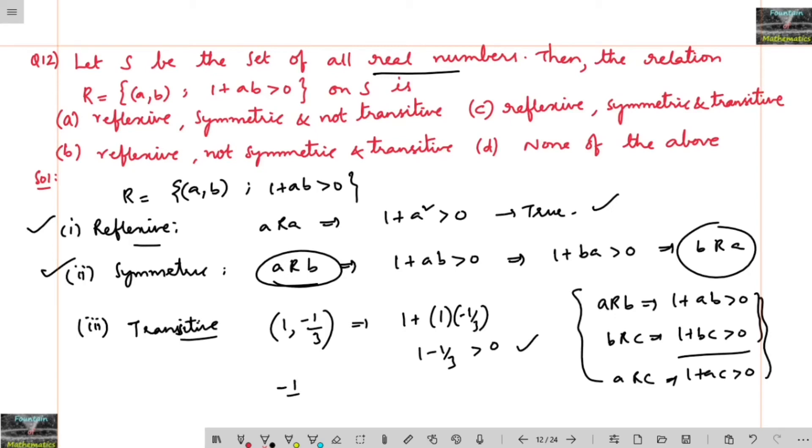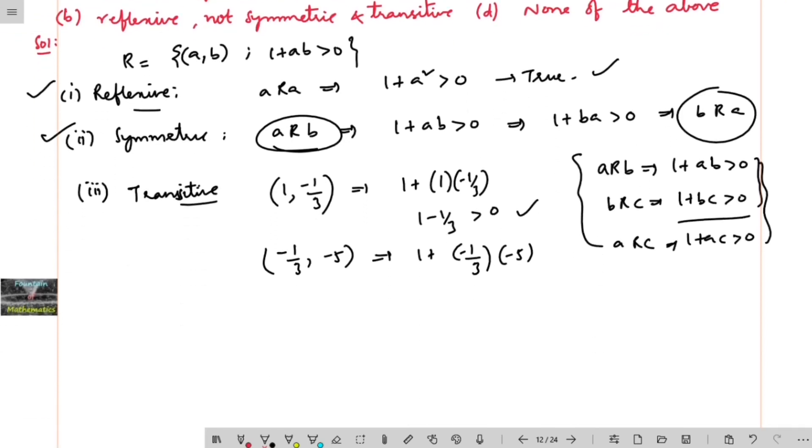And similarly, minus 1 by 3 comma, if I take minus 5. So 1 plus minus 1 by 3 into minus 5. Minus 1 by 3 into minus 5 is positive. 1 plus positive thing is always positive. That is 1 plus 5 by 3, which is equal to 8 by 3, is positive only. So this is also satisfied.